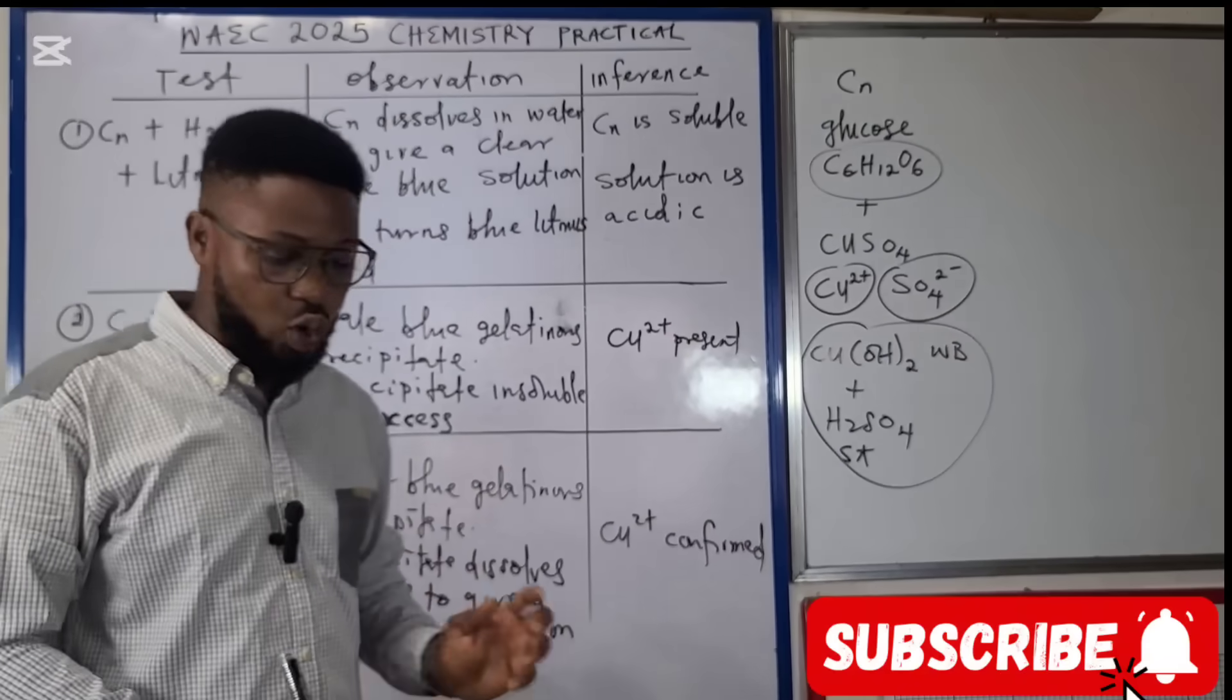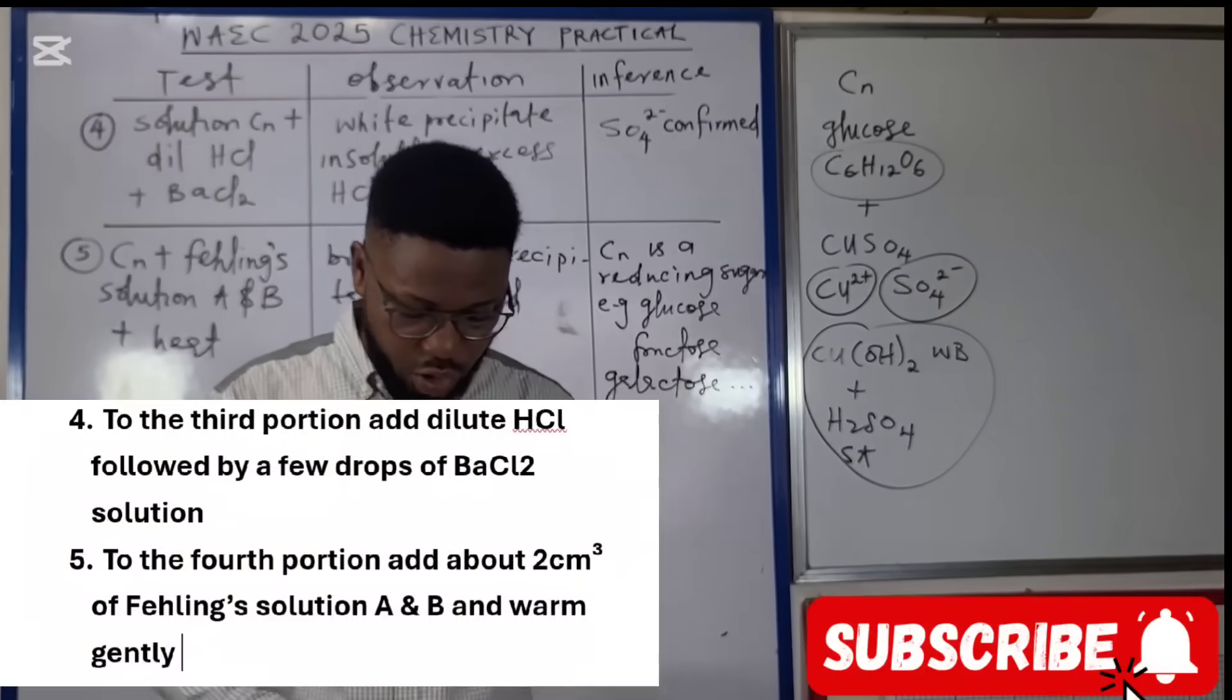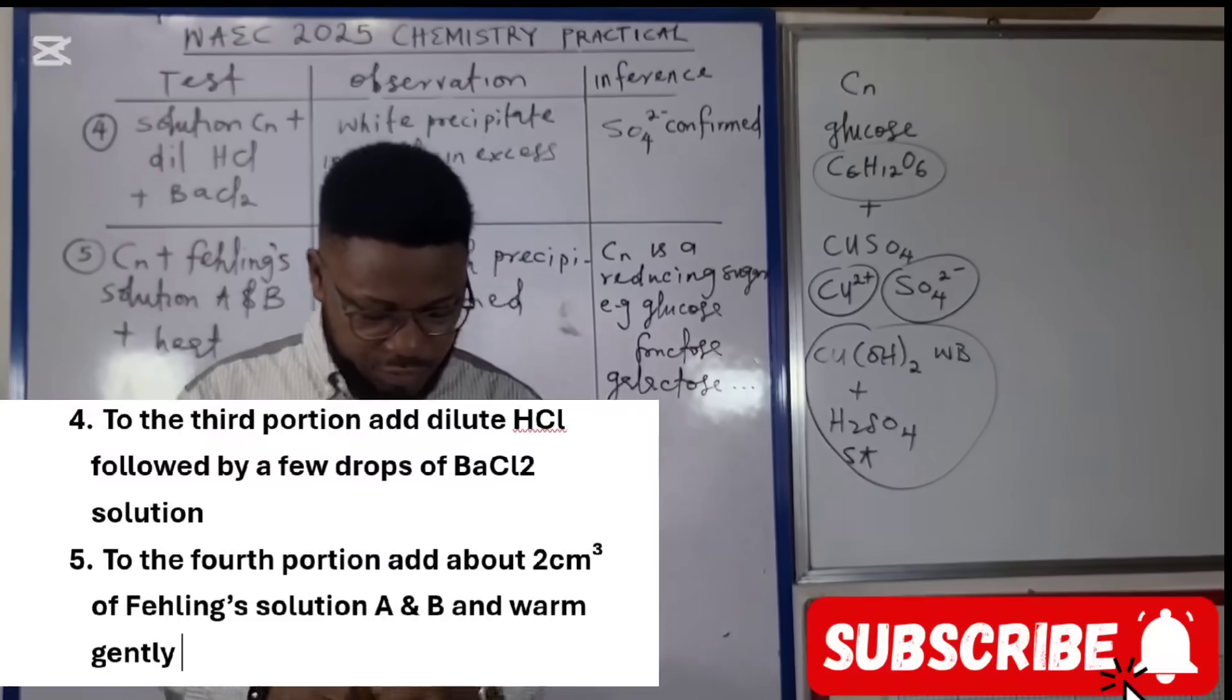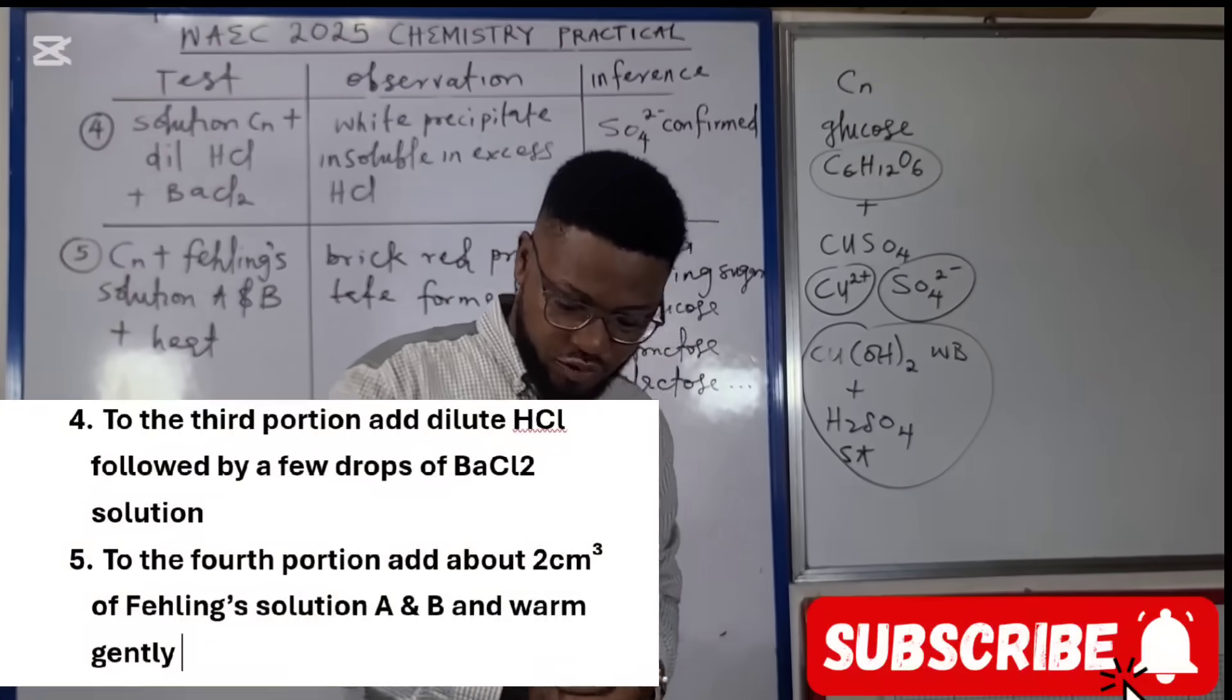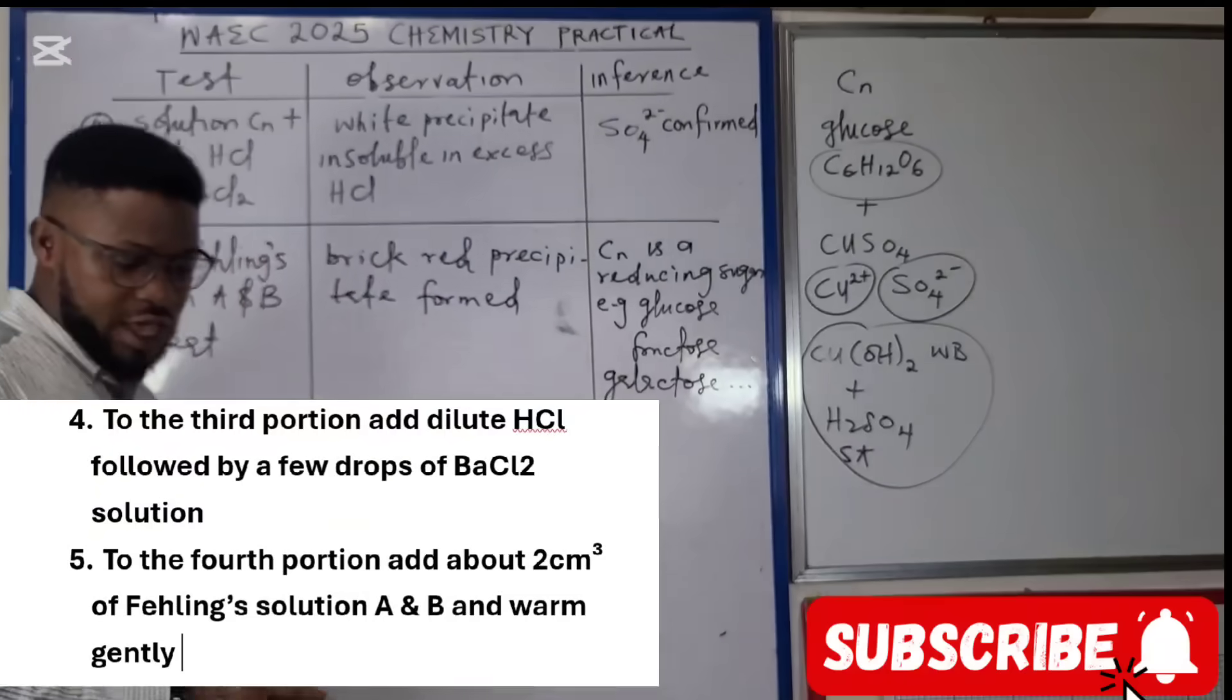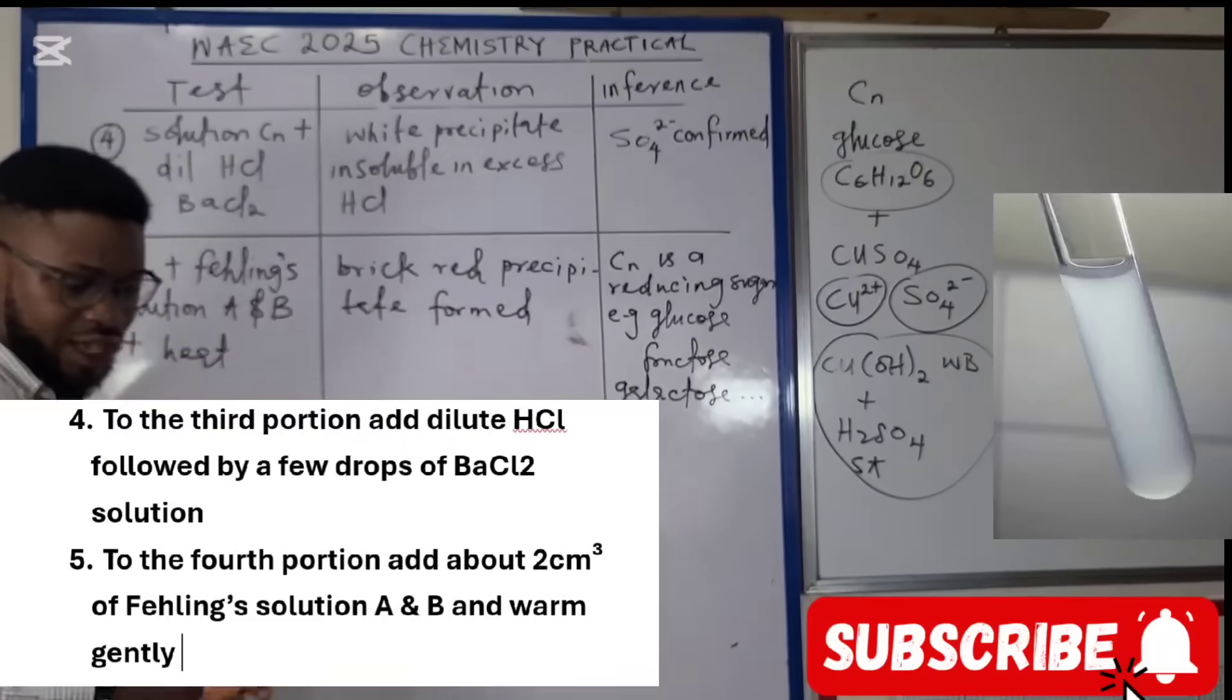Moving on to the fourth question - to the third portion add a few drops of dilute hydrochloric acid followed by a few drops of barium chloride. When you see a situation where we are using barium chloride and having to acidify the solution, that tells you we are trying to confirm for anions.